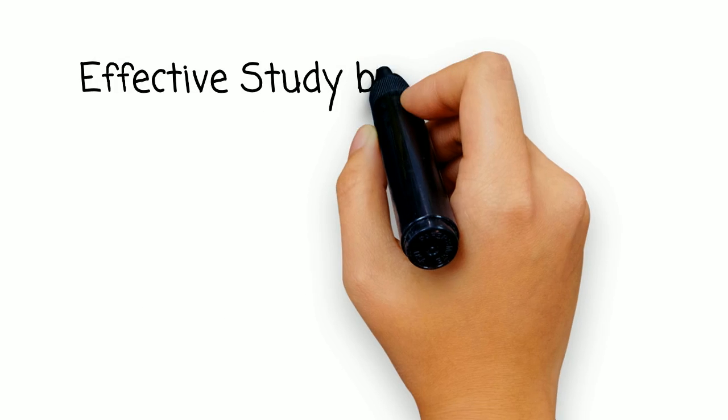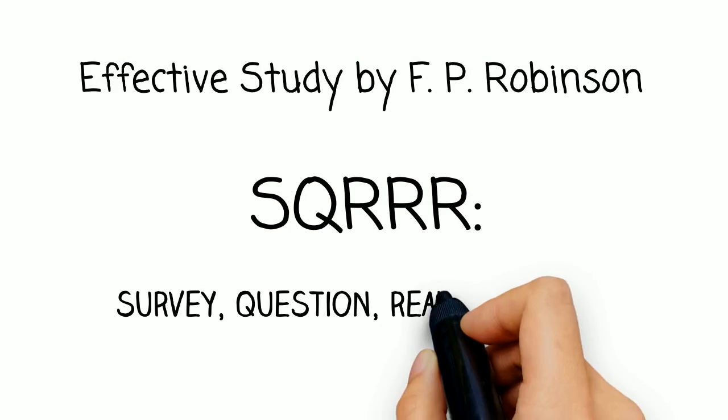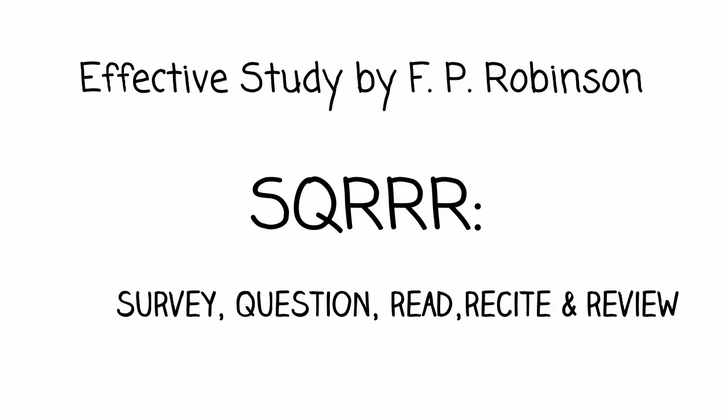So how do you read carefully? One of the best known reading methods is called SQ3R, first used by F.P. Robinson. The letters SQRRR stand for survey, question, read, recite, and review. Let's go through each one.